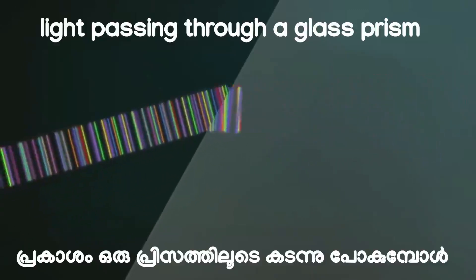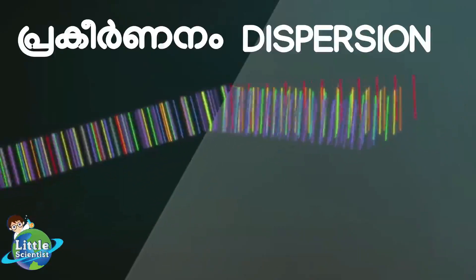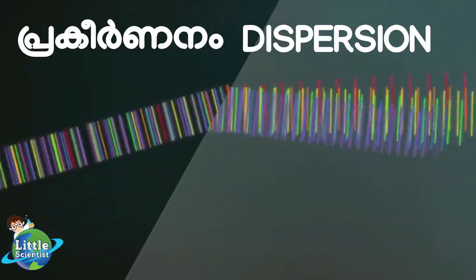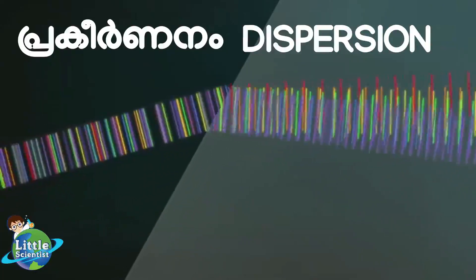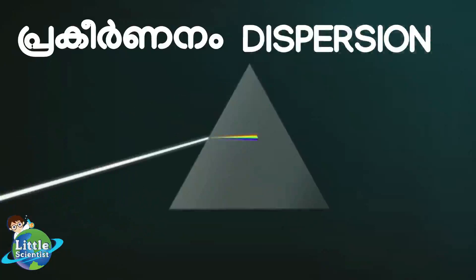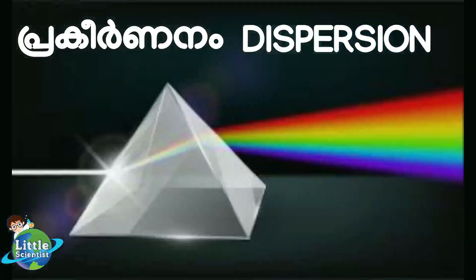What is dispersion of light? When white light passes through a glass prism, it splits into its spectrum of colors in order: violet, indigo, blue, green, yellow, orange, and red. This splitting of white light into its constituent colors is termed dispersion.